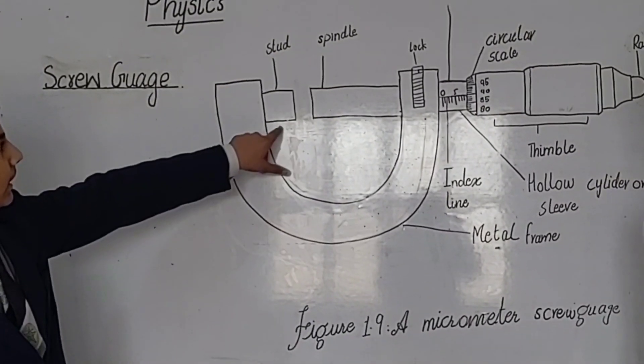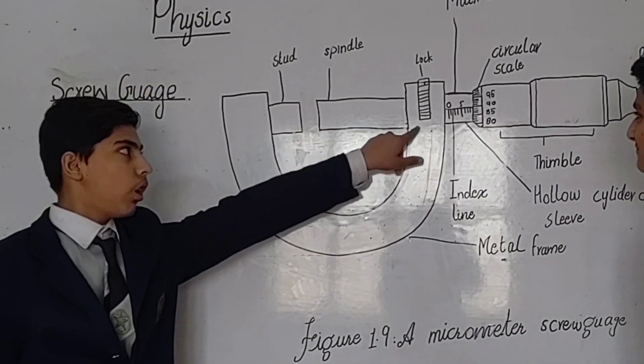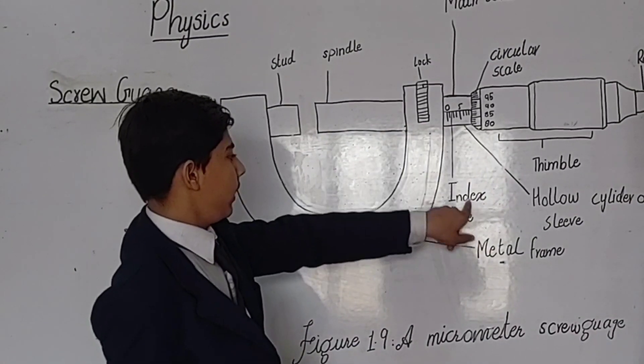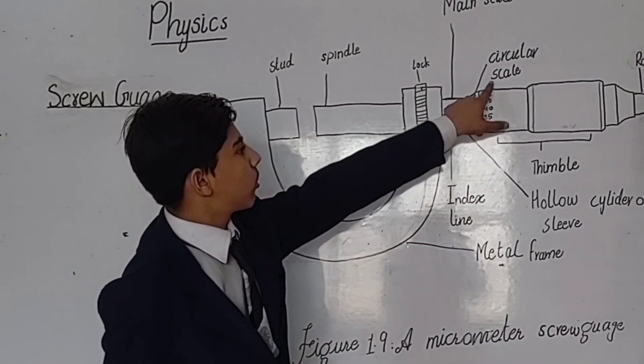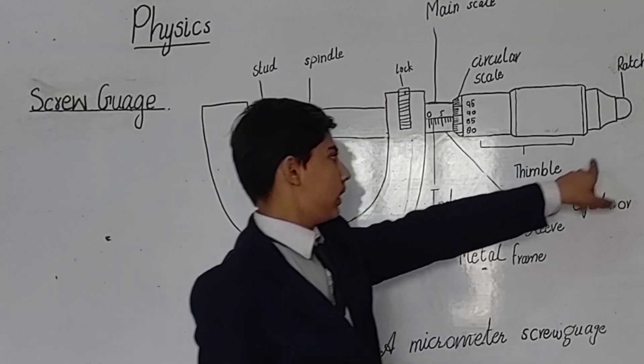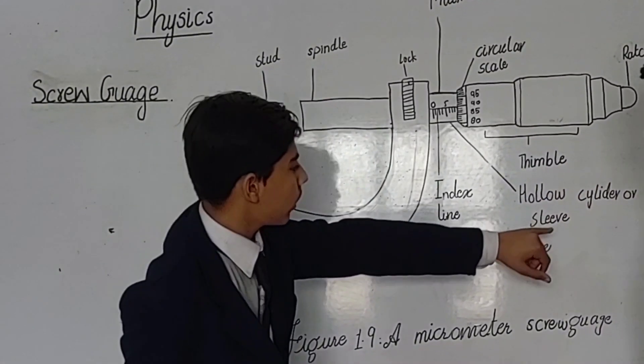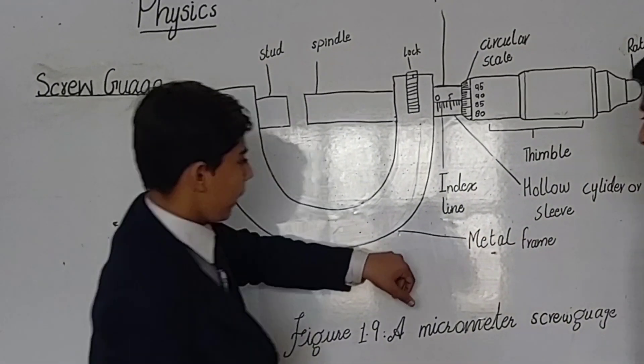The main parts of the screw gauge are: metal frame, metal stud, spindle, lock, main scale, index line, circular scale, ratchet, thimble, hollow cylinder or sleeve, and metal frame.